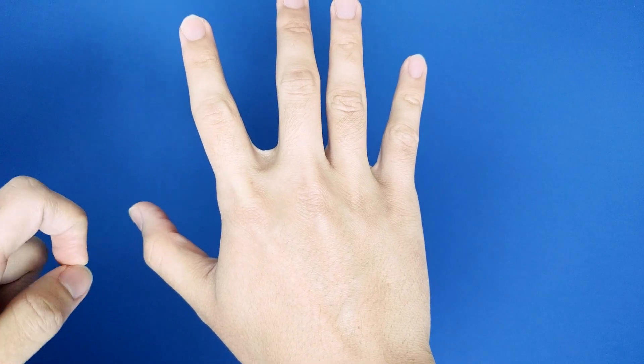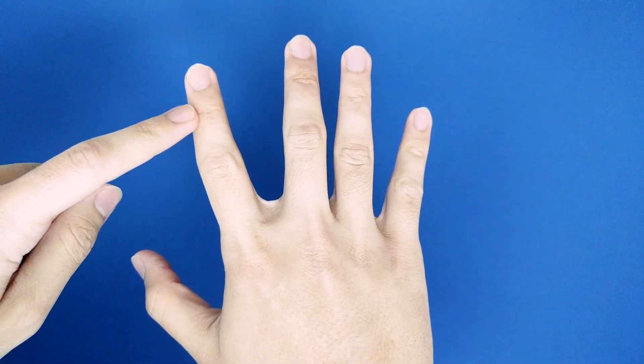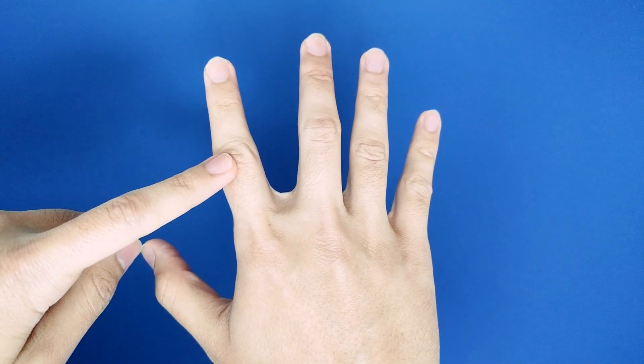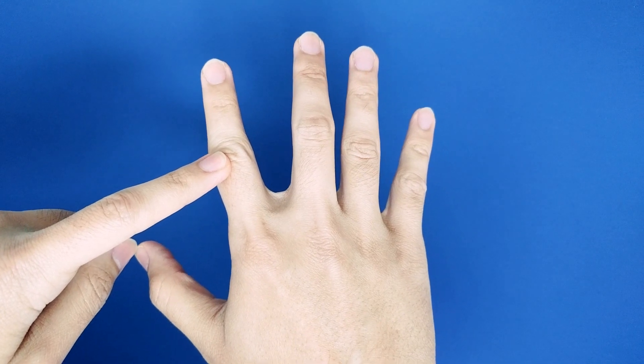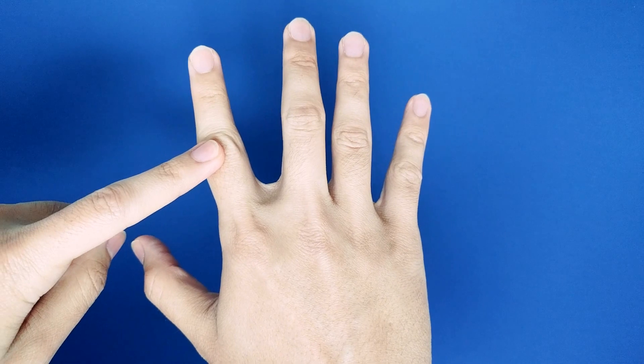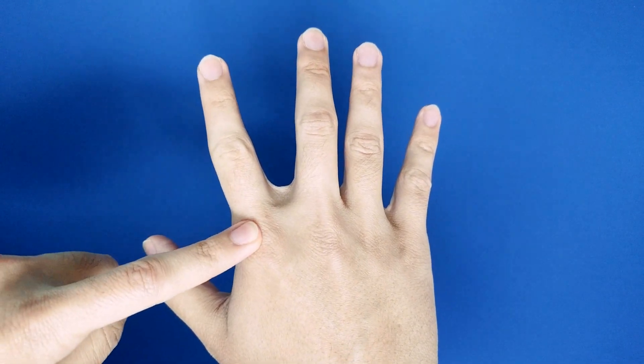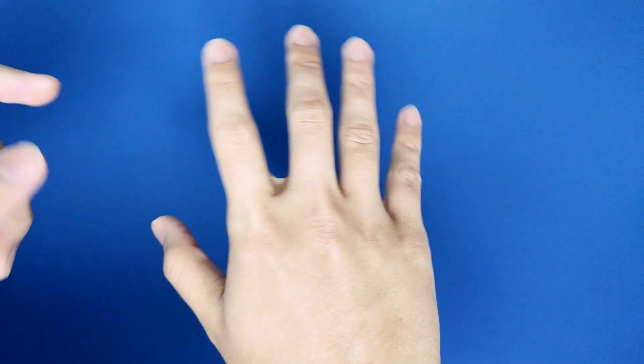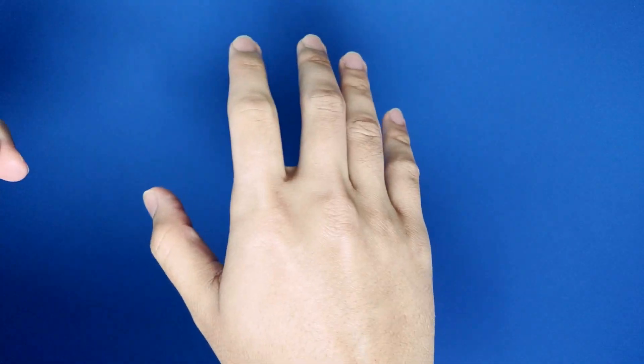Now in osteoarthritis you're going to see involvement of the DIP and the PIP, whereas in rheumatoid arthritis you're going to see involvement of the PIP and the MCP. So you may ask yourself, how am I going to remember this?